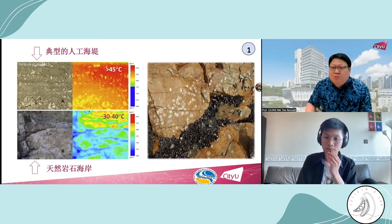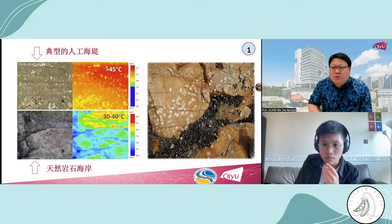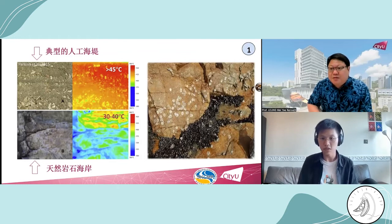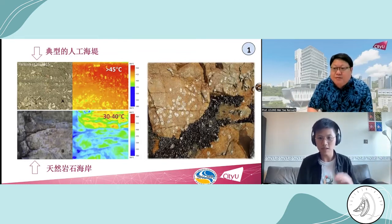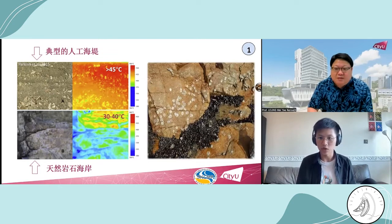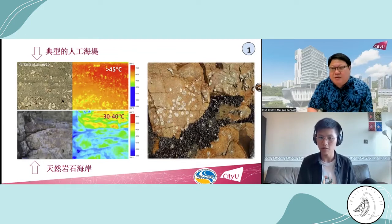What we can learn from this principle is essential if we want to revitalize marine life on artificial seawalls. Basically, there's a difference between flat land and uneven land in terms of temperature. By creating these eco-engineering tiles, we can reduce the temperature from 45 degrees or over to 30 to 40 degrees, which allows mussels and other organisms to live.